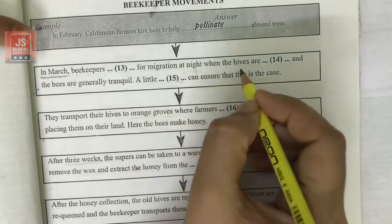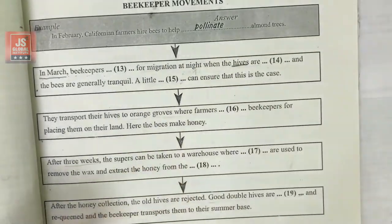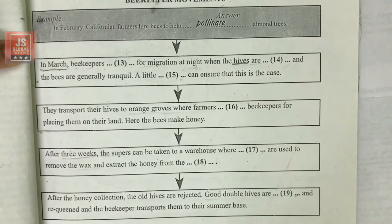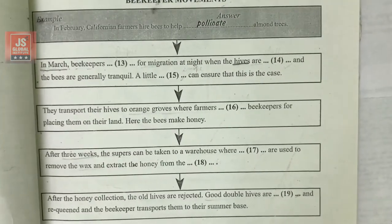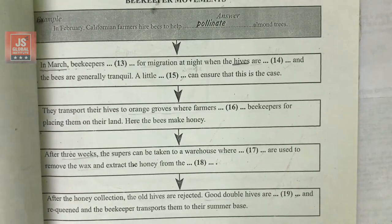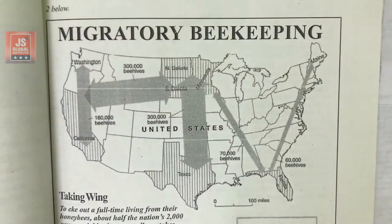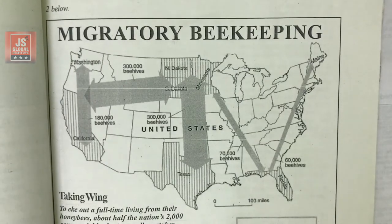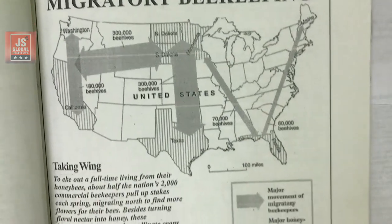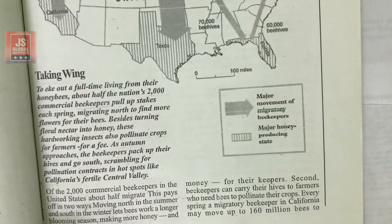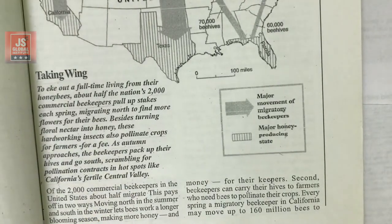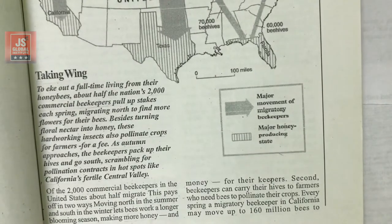Now, if we look at the passage, the first thing is to read the heading. We have already read the heading. Now we are going to see how to solve this passage. There is something extra written at the top — if you want to read it you can, but it is not essential. So we can start directly with the passage.